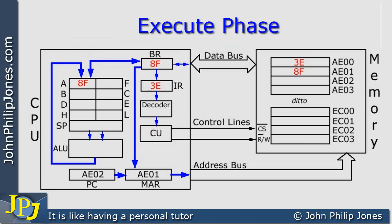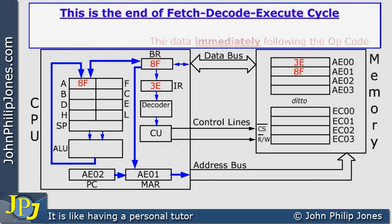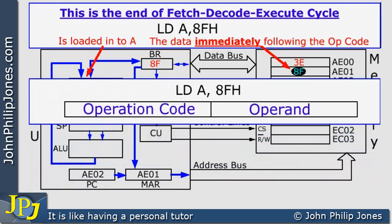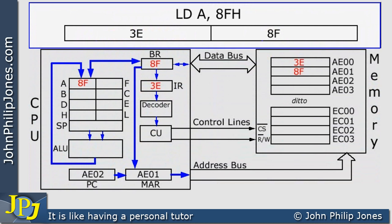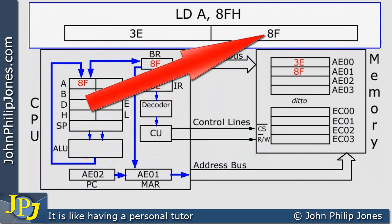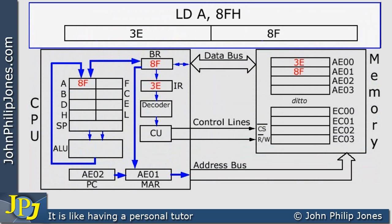That is the execute phase of the fetch, decode, execute cycle. We can see the data immediately following the opcode is loaded into A. Here we can see Load A with 8F — the instruction we've been discussing — with the opcode part being 3E and the operand part being 8F. Comparing this fetch, decode, execute cycle with the previous video on incrementing A, the fetch part is the same: going to memory, getting the opcode, and bringing it to the instruction register. The difference is the execute phase, which is what distinguishes one instruction from another.